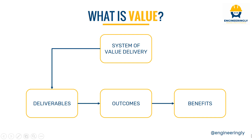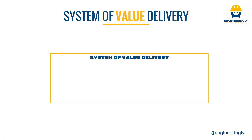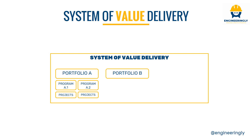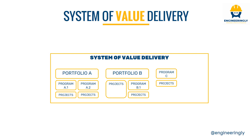Those customers, stakeholders, or end users return value to the system of value delivery. Within an organization, the system of value delivery may contain a portfolio under which there are different programs, and under those programs there are a number of projects. There might also be another portfolio with programs and projects reporting directly to it, as well as standalone programs reporting directly to the head of the system of value delivery — which might be a PMO. Under programs there may be projects, and there might also be standalone projects that fall under no program and no portfolio in the organization.